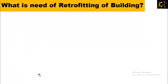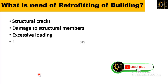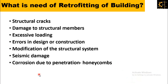Now let's look at why we need retrofitting of a building. We need retrofitting because of structural cracks, damage to structural members, excessive loading, errors in design or construction, modification of the structural system, seismic damage, corrosion due to penetration, or honeycombs. These are the reasons why we need retrofitting of a building.